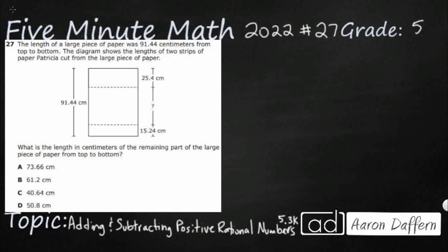So we've got the length of a large piece of paper was 91.44 centimeters from top to bottom. The diagram shows the length of two strips of paper Patricia cut from the large piece. We've got a strip here, 25.4, and then another strip down here, 15.24. What is the length in centimeters of the remaining part of the large piece from top to bottom? So we're looking for this chunk right here.